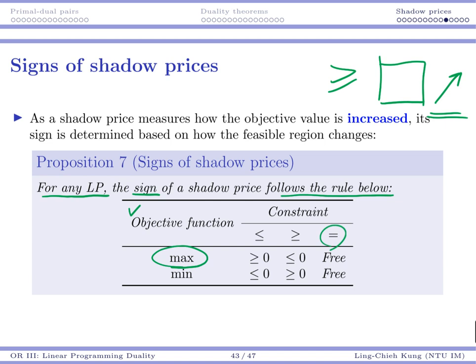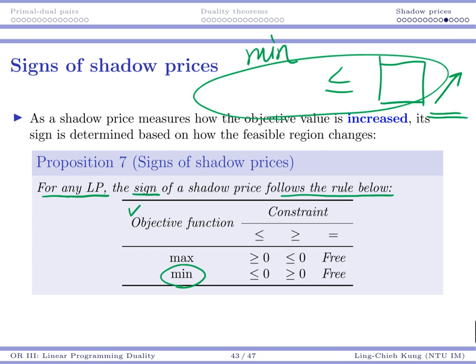If an equality constraint exists and you change your right-hand side, there is really no way to predict the impact on the objective function — it may be positive, negative, or zero. For a minimization problem with a less than or equal to constraint, when your right-hand side increases the feasible region becomes larger and you may do better. But doing better for a minimization problem means your objective value goes down, so the amount of increase may be negative or zero.